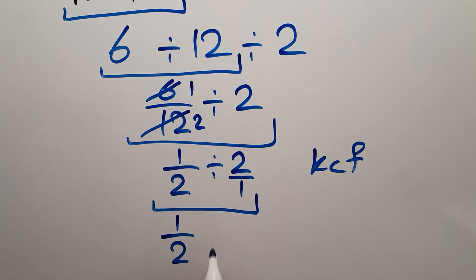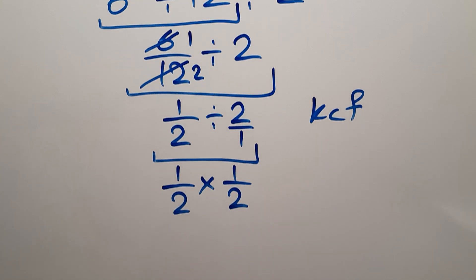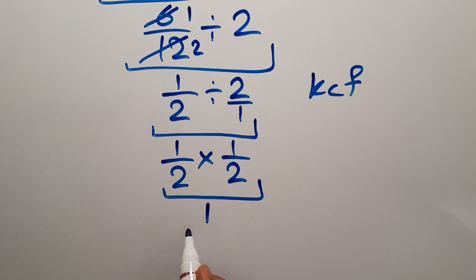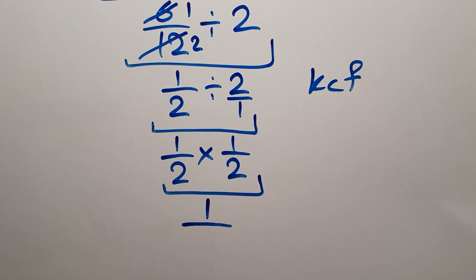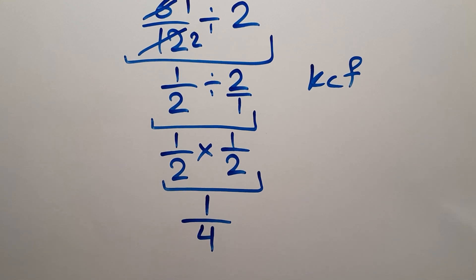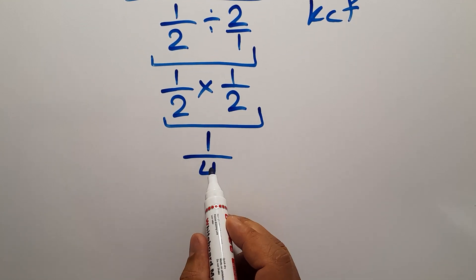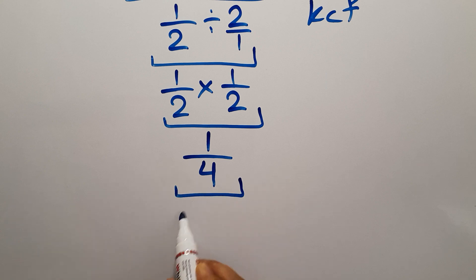And this is equal to 1 times 1 gives us 1. So 1 over 2 times 2, which equals 4. So our final answer to this problem is just 1 over 4 or 0.25.